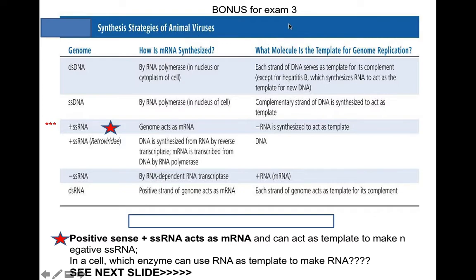This is a bonus topic for lecture exam 3. It's a nice table comparing the strategies for animal viruses. Viruses are divided into DNA viruses and RNA viruses, and further into double-stranded DNA or single-stranded DNA viruses. DNA viruses have it pretty easy because they can basically use cellular DNA polymerases and cellular RNA polymerases if need be.